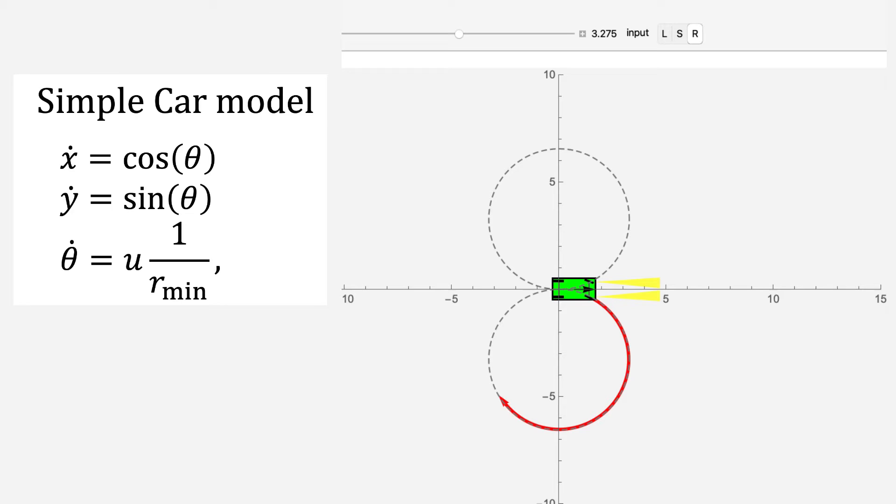Dubins proved that the shortest path consists of no more than three segments, where in each segment U is either negative 1, 0, or 1. We call these segments motion primitives.